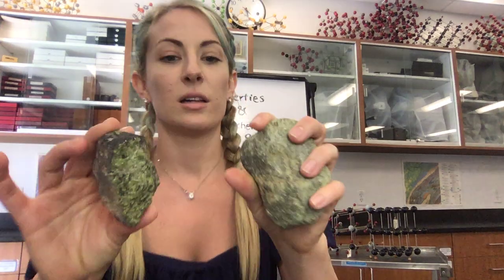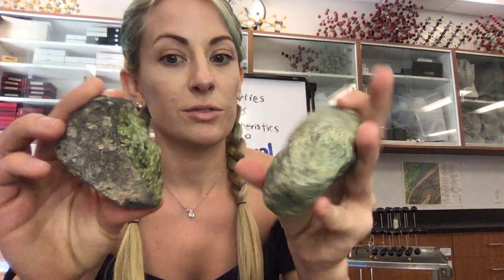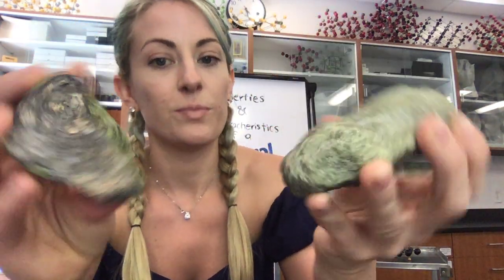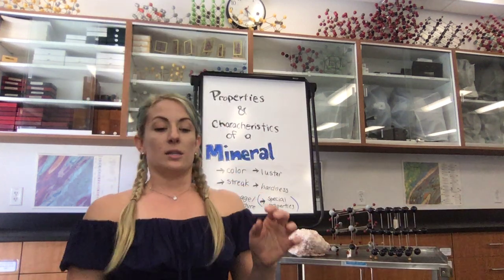Sometimes color can be very easy, such as with this olivine. We say olivine is olive green, and when you see something that looks like these two specimens, you know it's olivine. But you have to look at other characteristics — such as the texture and the way the light bounces off of it — to further identify or narrow down what your specimen is.